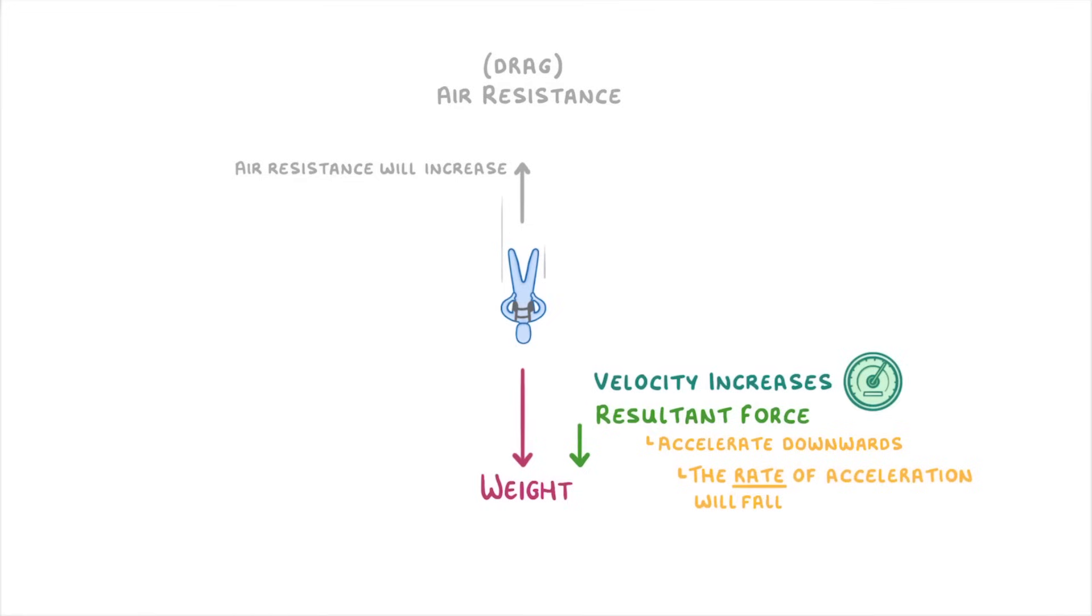We can see all of this if we plot it on a velocity time graph. With their velocity on the y-axis, and their time on the x-axis. As time goes on, and they fall faster and faster, their air resistance will be increasing. And so the graph starts to get less steep. Because the rate of acceleration is decreasing.